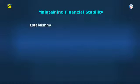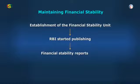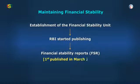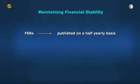Following the establishment of the financial stability unit, the Reserve Bank started publishing periodic Financial Stability Reports (FSRs), with the first FSR being published in March 2010. FSRs are now being published on a half-yearly basis in June and December.